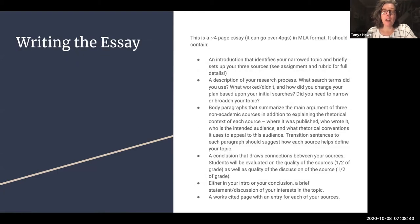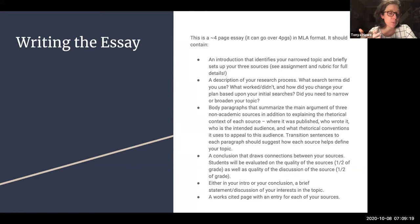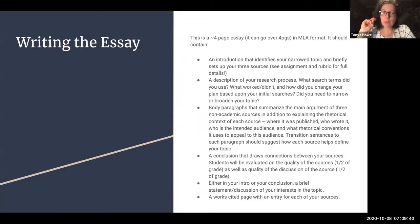When you write the essay, these are the things I'm going to be looking for. Your essay should be four pages — it can go over four pages, but it really should not be less than four pages. There is variation in page number because you have the option of doing one or two paragraphs for each of your sources. You could have three body paragraphs, one for each source, or six body paragraphs, two for each source, which will change the overall length quite dramatically. You're going to have an introduction that identifies your narrow topic and briefly sets up your three sources. There is a full assignment and rubric available on Canvas, so please do read through that.